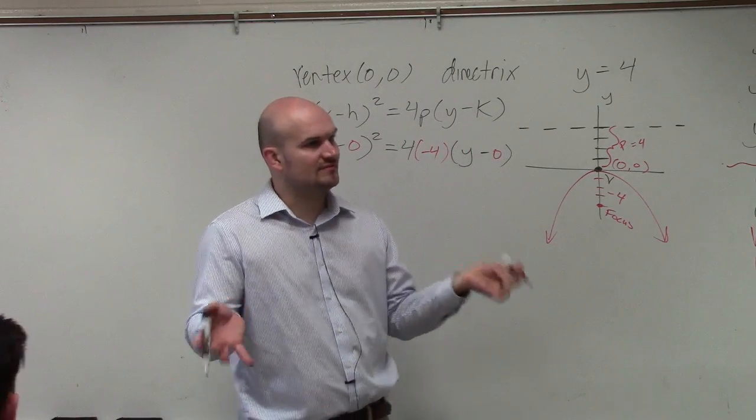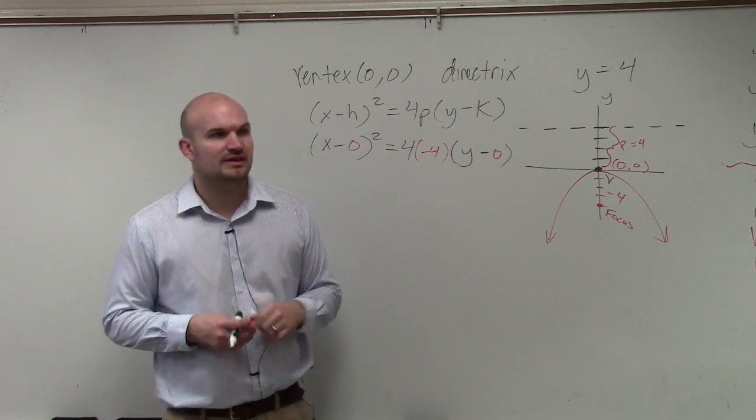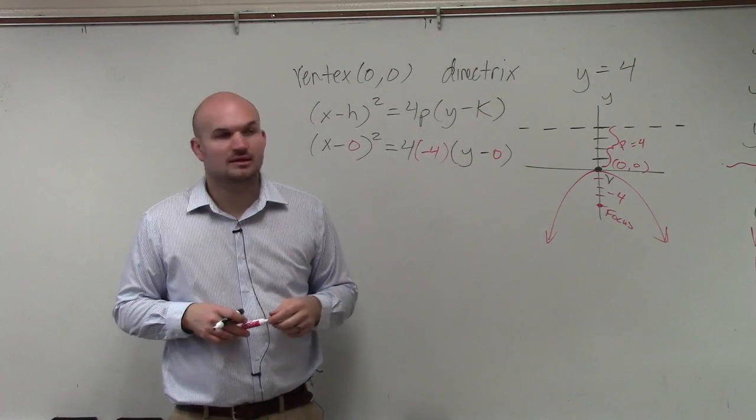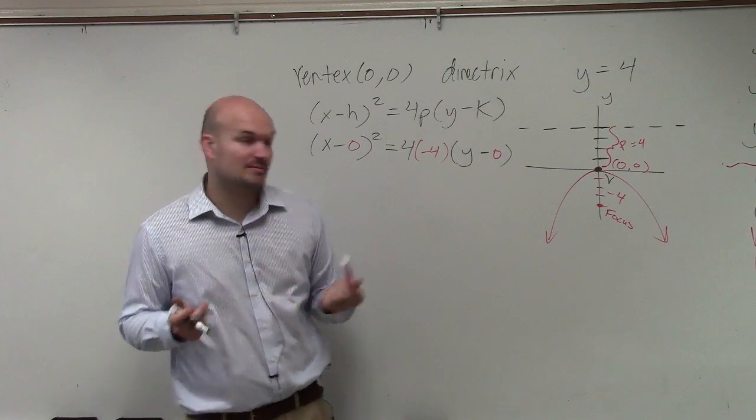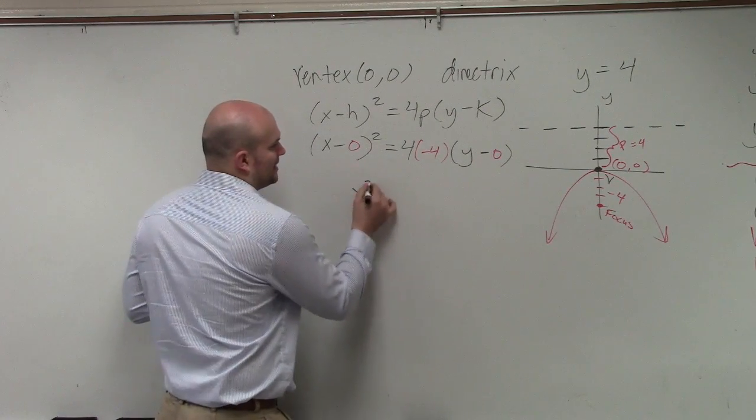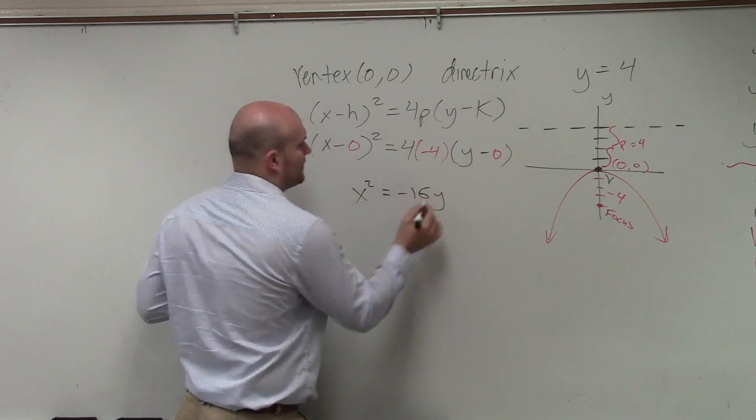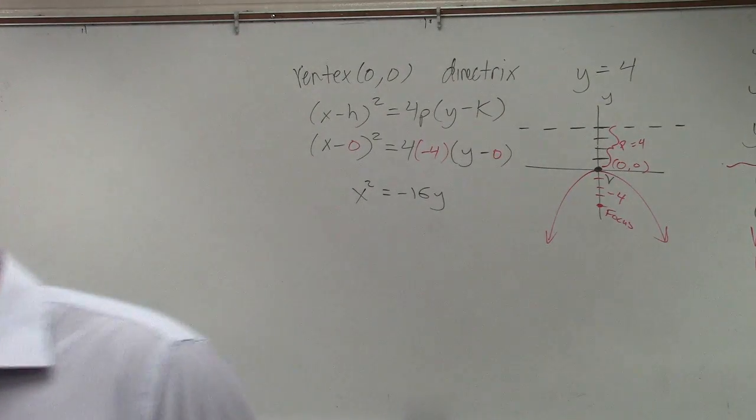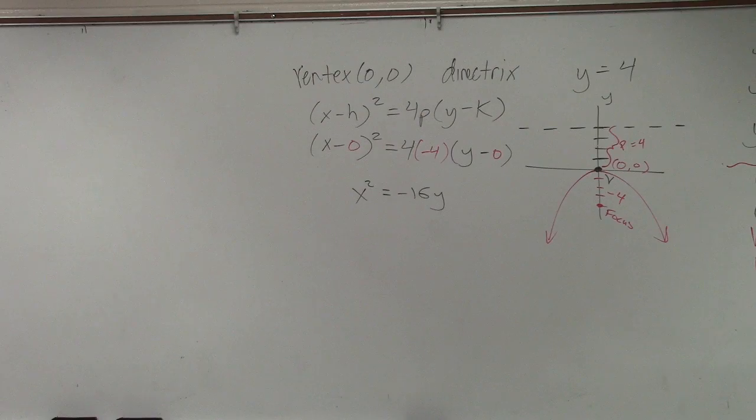Always use that value for your p. Even though the absolute distance is 4, but since we're going down, it's going to be negative. Does that make sense? So then my final equation would be x squared equals negative 16y. Done. Questions?